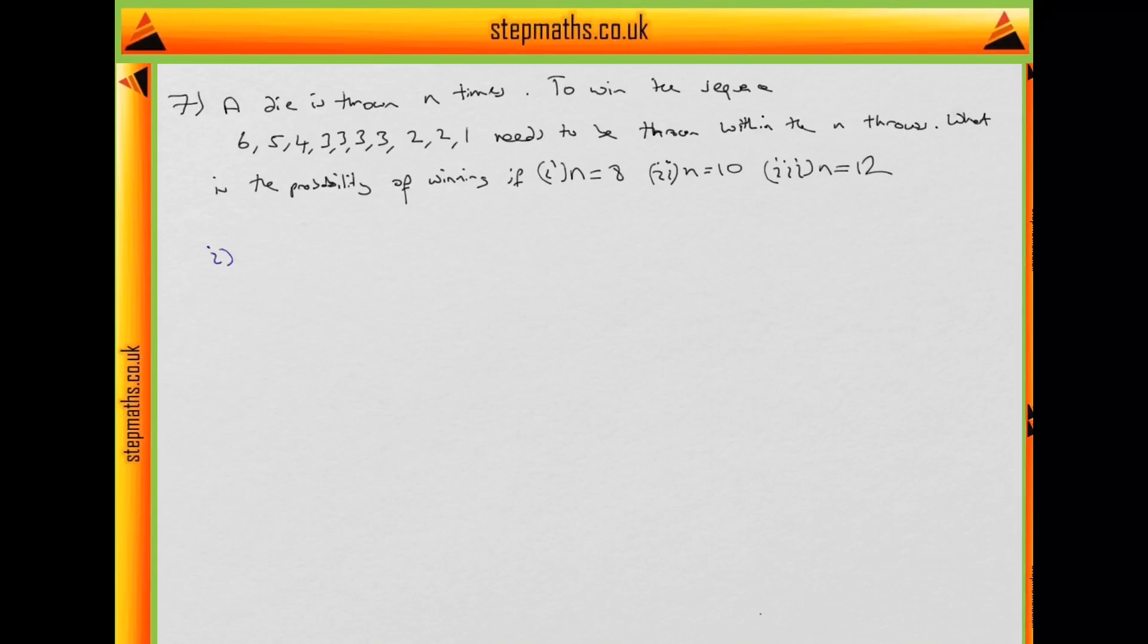Okay, so let's consider first part (i). How many numbers are in our sequence? We have 1, 2, 3, 4, 5, 6, 7, 8, 9, 10. So there's 10 numbers required.